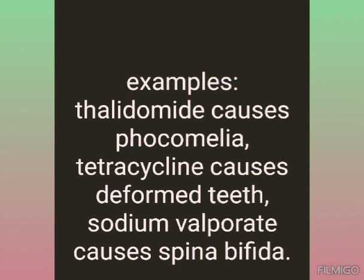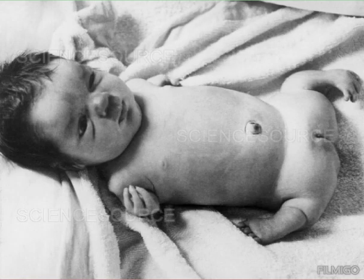The type of malformation also depends on the drug. For example, thalidomide causes phocomelia, tetracycline causes deformed teeth, and sodium valproate causes spina bifida. These are examples of drugs that affect the type of malformation. This image shows a baby with thalidomide teratogenicity, displaying the phocomelia condition.